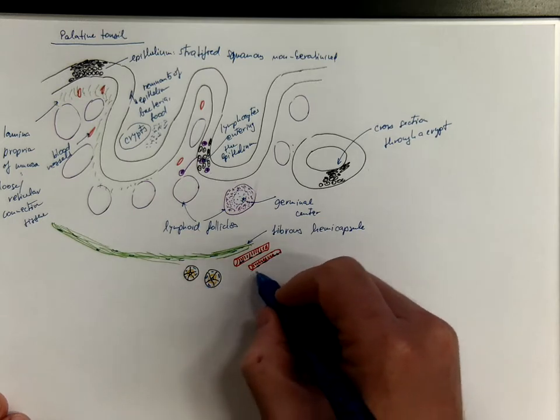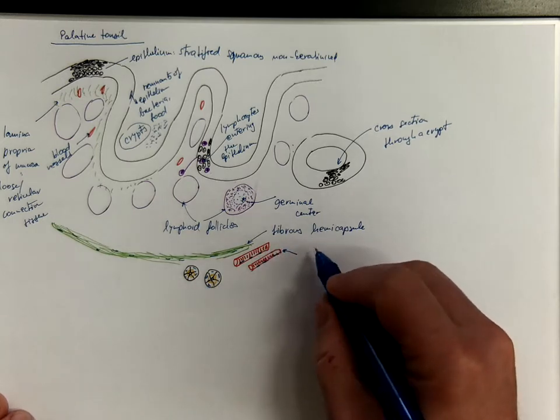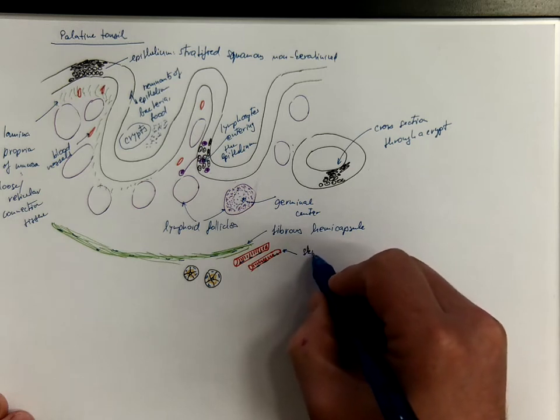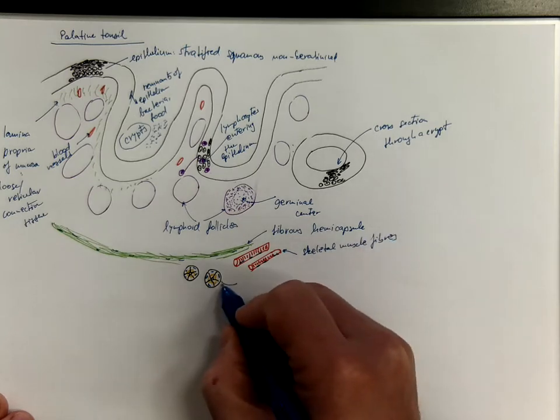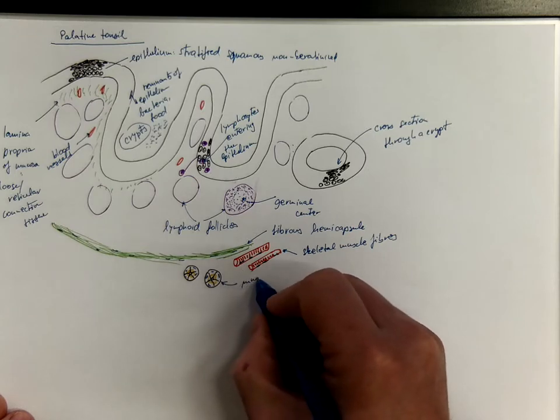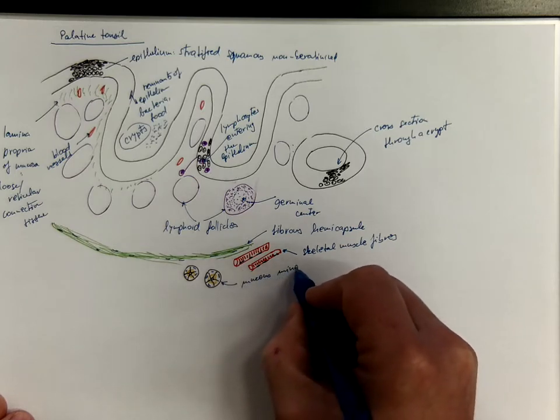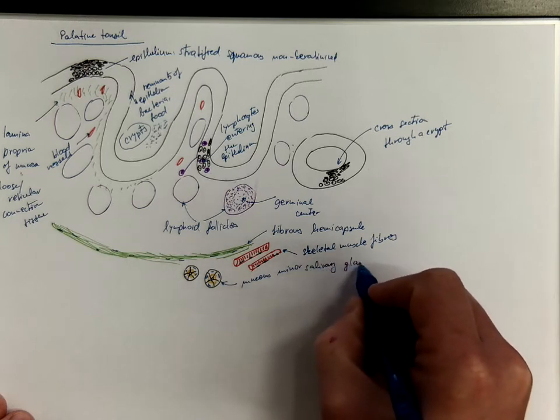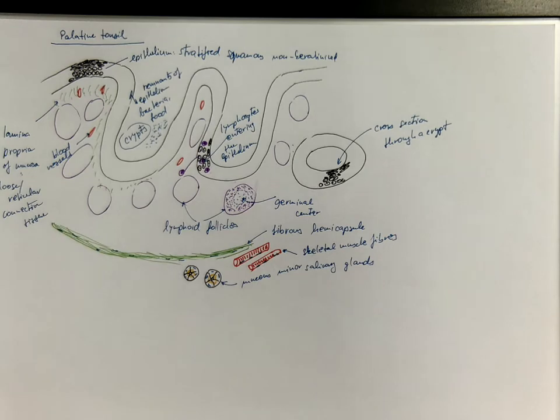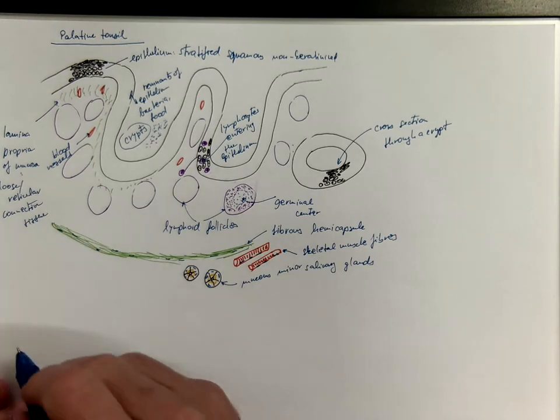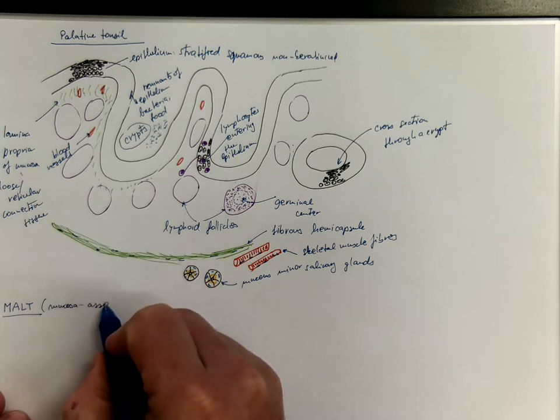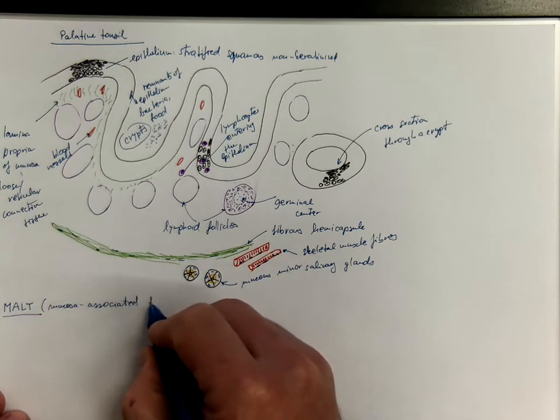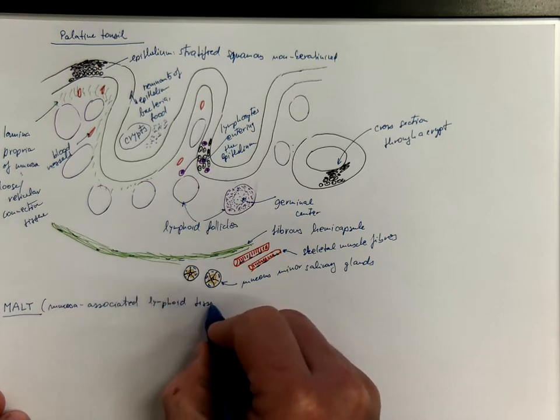And there is the fibrous hemicapsule with mostly fibrocytes and fibroblasts. And these are already the structures occurring in the surrounding tissues. So that's the skeletal muscle fibers and mucus minor salivary glands. Palatine tonsils are part of the so-called MALT, which says mucosa associated lymphoid tissue.